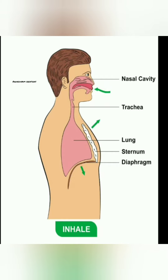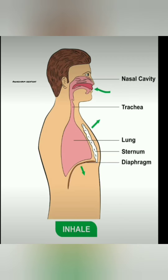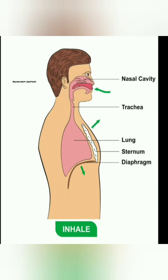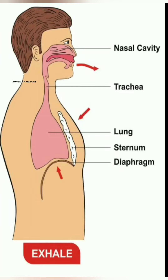So during inhalation, the diaphragm contracts and moves down. The volume of the chest cavity increases. The pressure between air molecules in the lungs decreases compared to outside. So the air molecules enter through the nose and move into the lungs — this is the inhalation process.